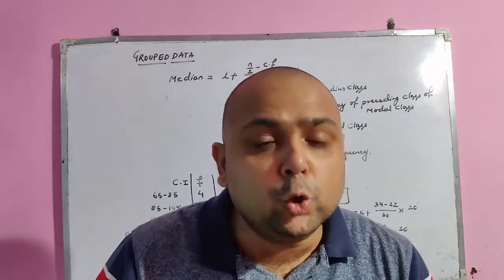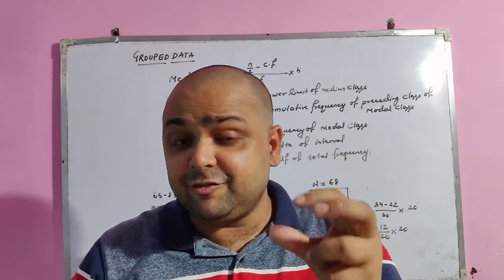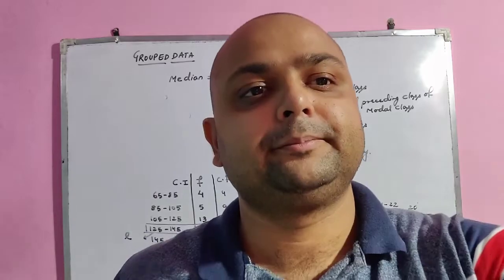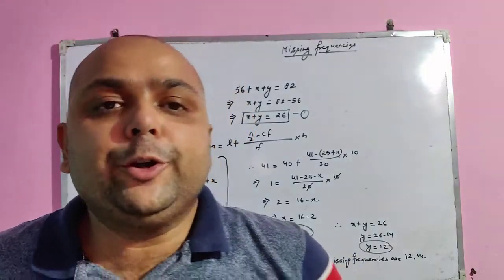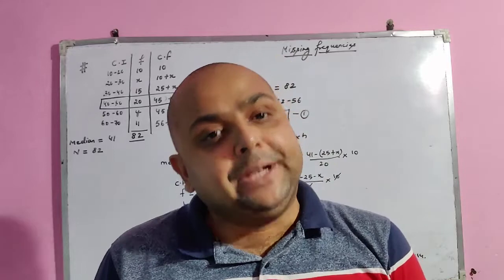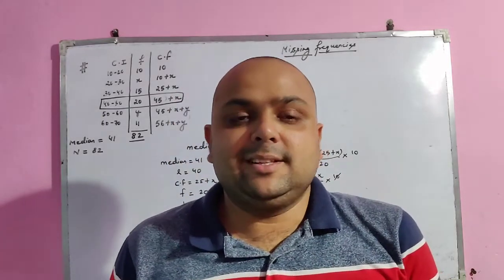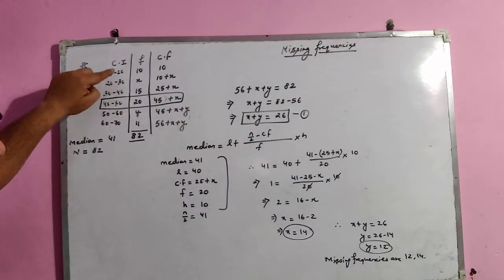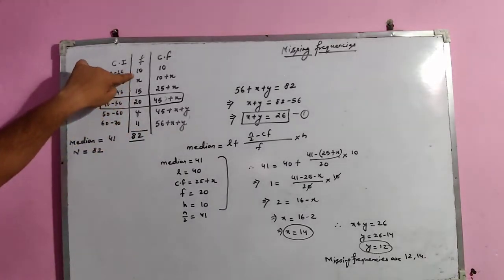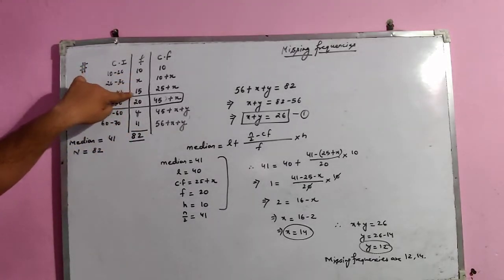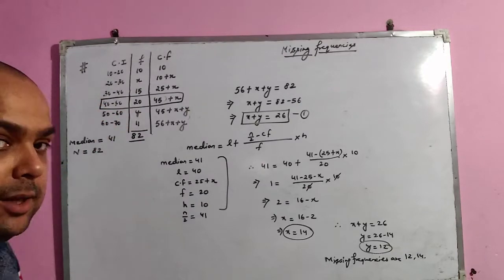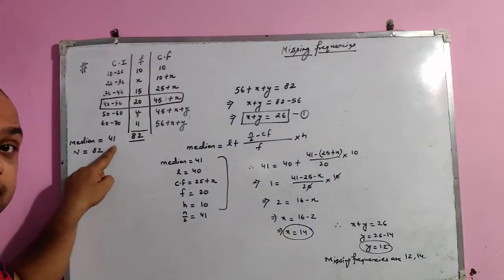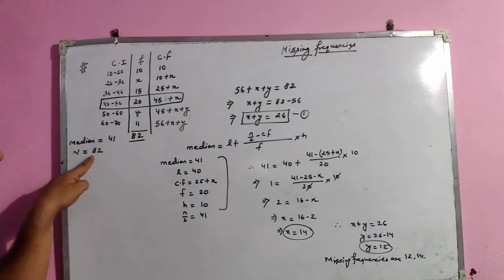Now let's look at a problem where we calculate missing frequencies when the median is given. The class intervals are 10–20, 20–30, and so on. The frequencies are: 10, x (unknown), 15, 20, y (unknown), and 11. We have two unknown frequencies x and y. The median is given as 41 and the total frequency is 82.